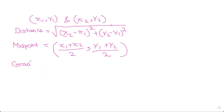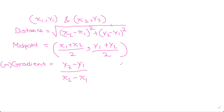Now let's look at gradient. Gradient m is (y2 minus y1) divided by (x2 minus x1) — remember m from the straight line equation. When you have two parallel lines, the gradient m is equal between the two lines.